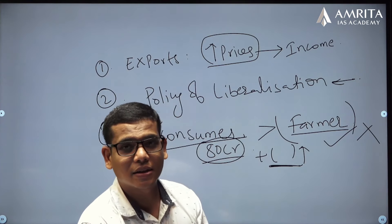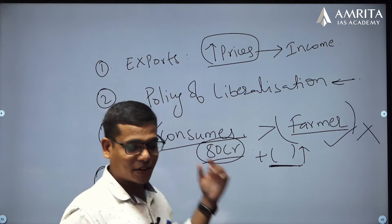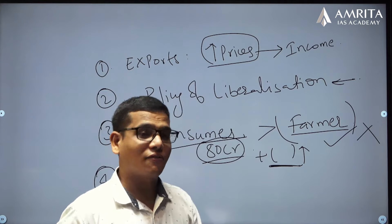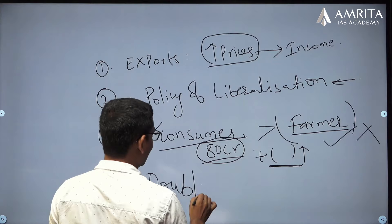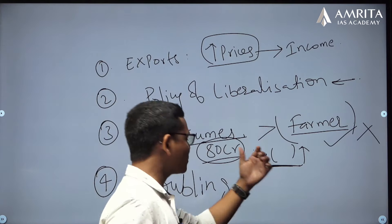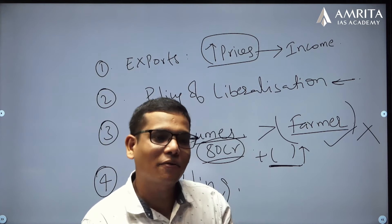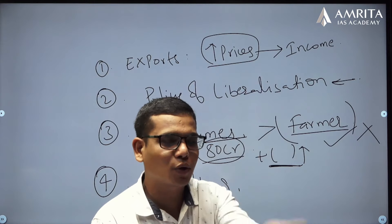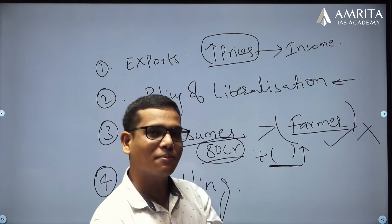What about the government's promise to double farmers' income? When farmers are ready to get some benefit from better market prices, you suddenly stop them. You cannot increase farmers' income simply through subsidized inputs. When farmers find a good price in the market and try to access it, not allowing them to do so defeats the entire purpose of that policy.